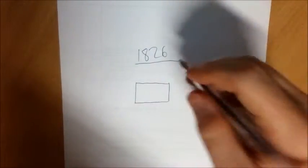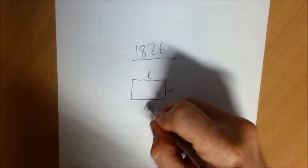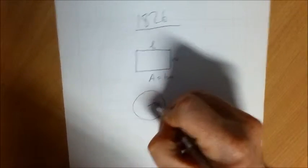So you know how the area of a rectangle is just the length times the width, so area equals length times width, or the area of a circle is pi r squared.